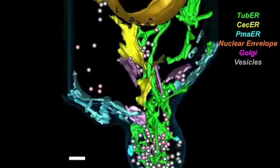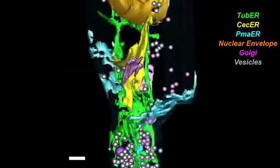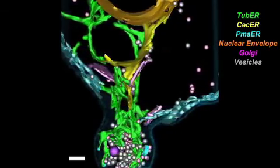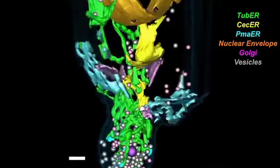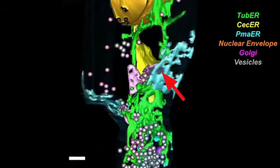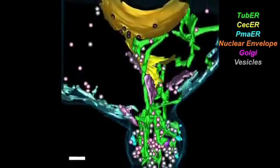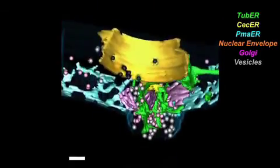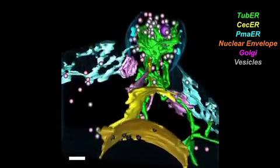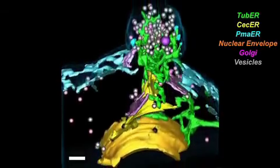We expected to see a tubular ER network just under the plasma membrane. But as we started to reconstruct it, we quickly realized the structure was much more complicated — a combination of small cisternae and fenestrated cisternae interconnected by tubular ER, quite different from what we had expected. In our final calculations, about 25 to 40 percent of the plasma membrane was covered in this tubular ER and cisternal ER network.